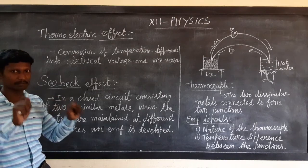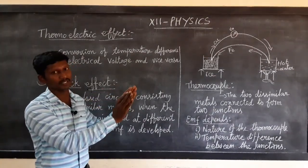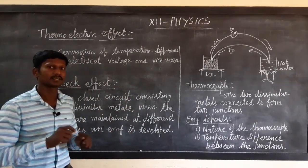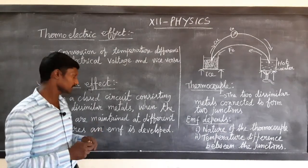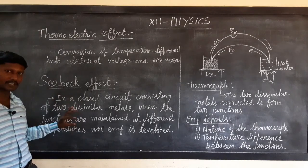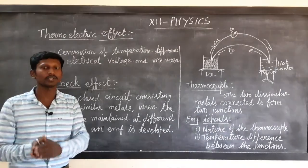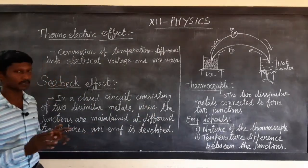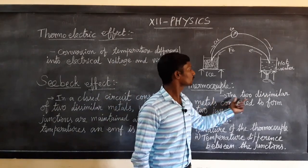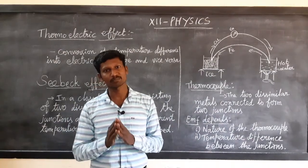We create a junction from dissimilar metals. That junction is known as a thermocouple. The dissimilar metal arrangement is known as a thermocouple. In a thermocouple, when we create a temperature difference across the two junctions, an EMF is developed, and this effect is known as the Seebeck effect.